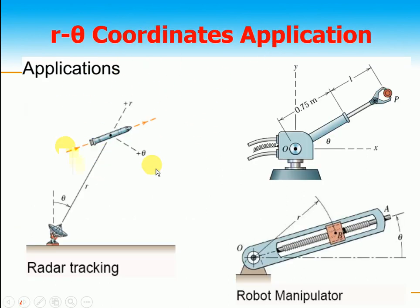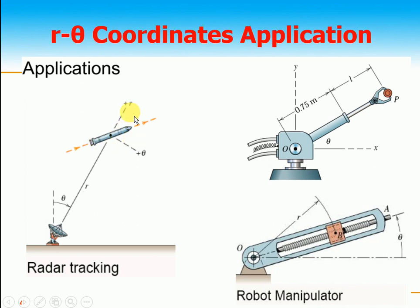Let me give you applications of the r-theta coordinate. For example, this missile is moving along a trajectory shown by the orange line, and this is the radar tracking the missile. The radial direction is the line of sight of the radar, and the other is the theta direction. To find the velocity and acceleration of this missile, it is easier to analyze in r-theta coordinates compared to Cartesian or normal-tangential coordinates.